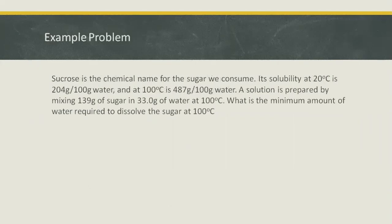Sample problem. Sucrose is the chemical name for the sugar we consume. Its solubility at 20 degrees Celsius is 204 gram per 100 gram water, and at 100 degrees Celsius is 487 gram per 100 gram water. A solution is prepared by mixing 139 gram of sugar in 33 grams of water at 100 degrees Celsius. What is the minimum amount of water required to dissolve the sugar at 100 degrees Celsius?